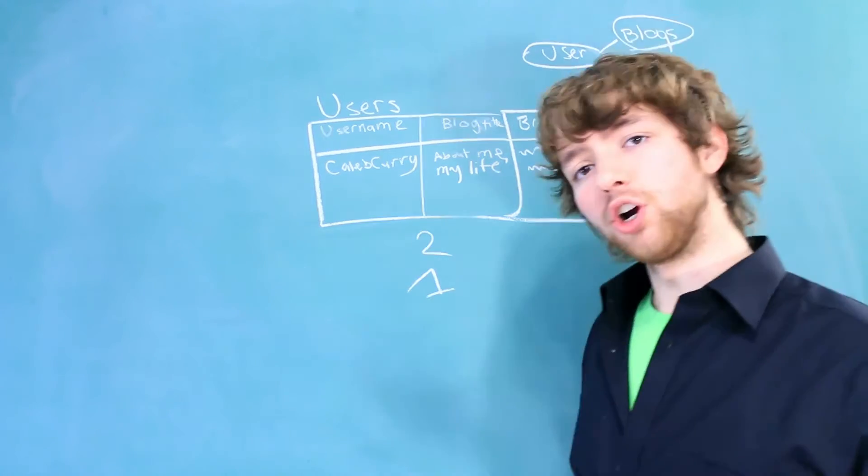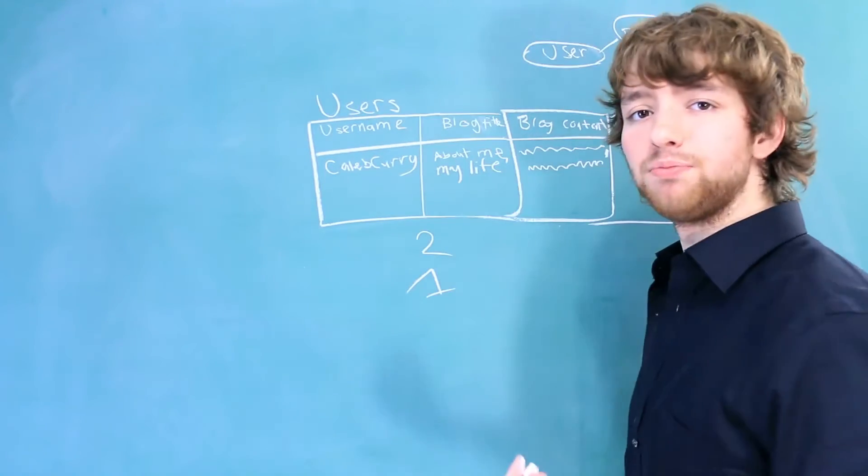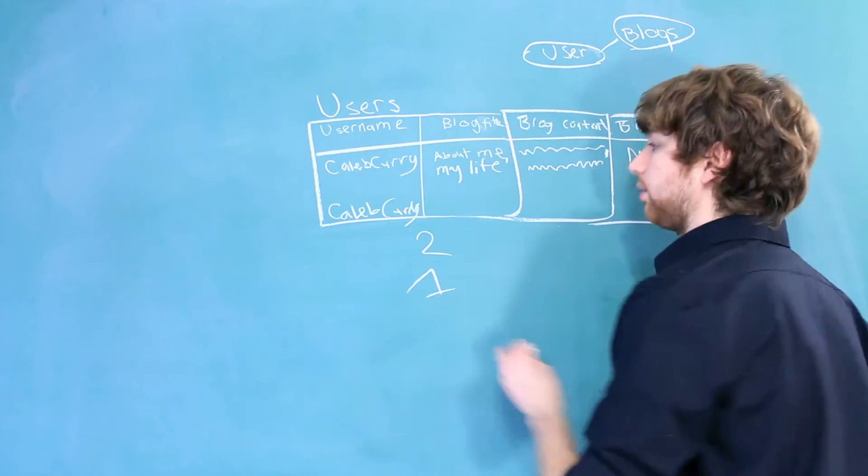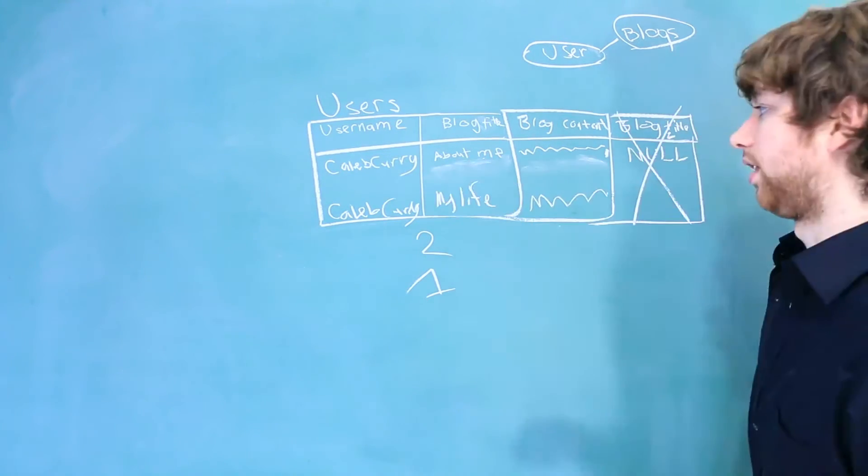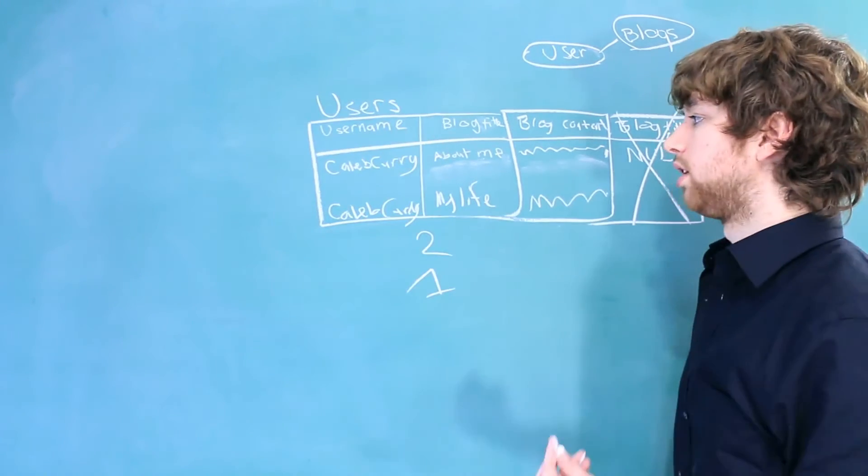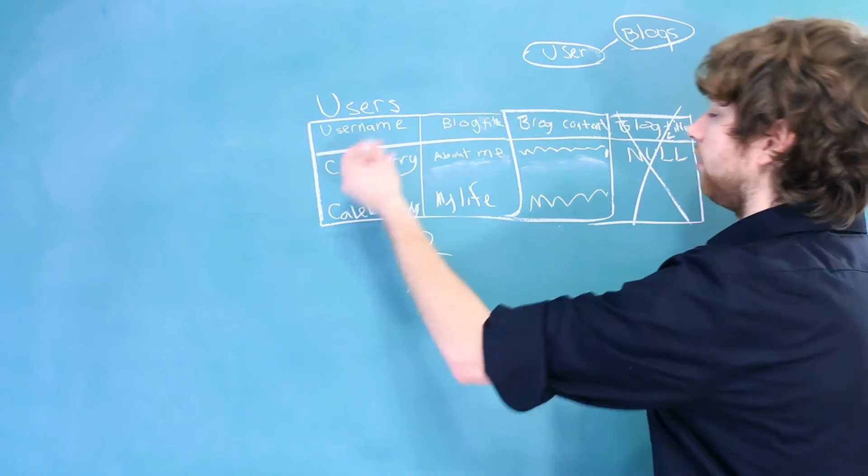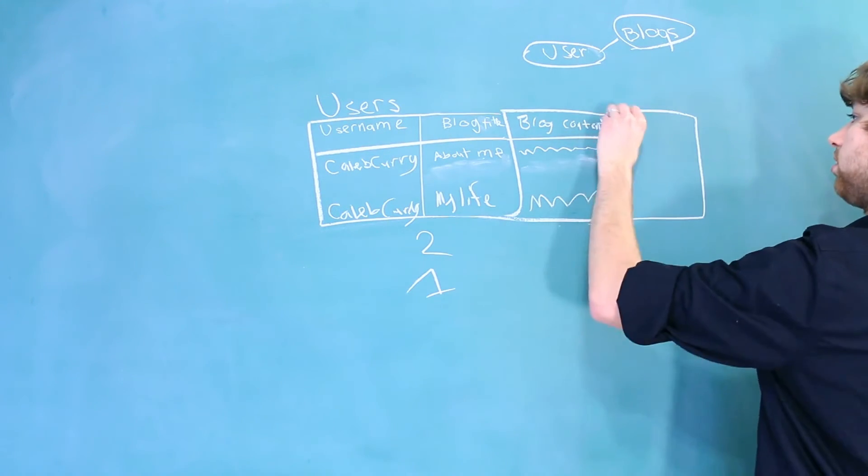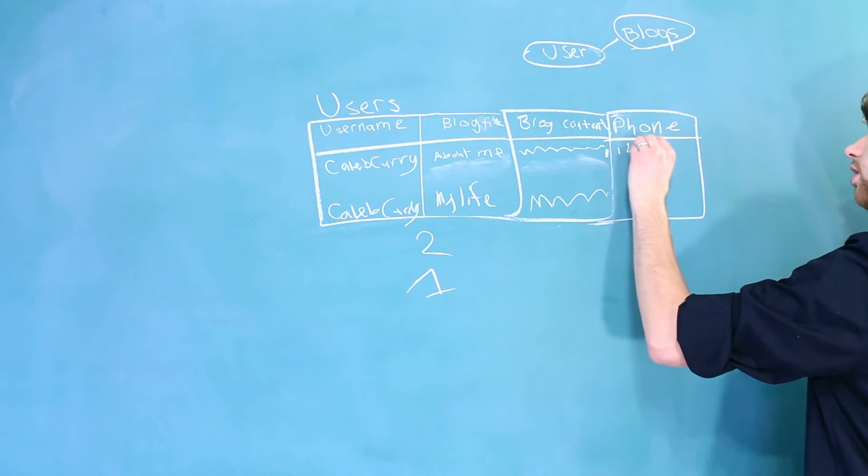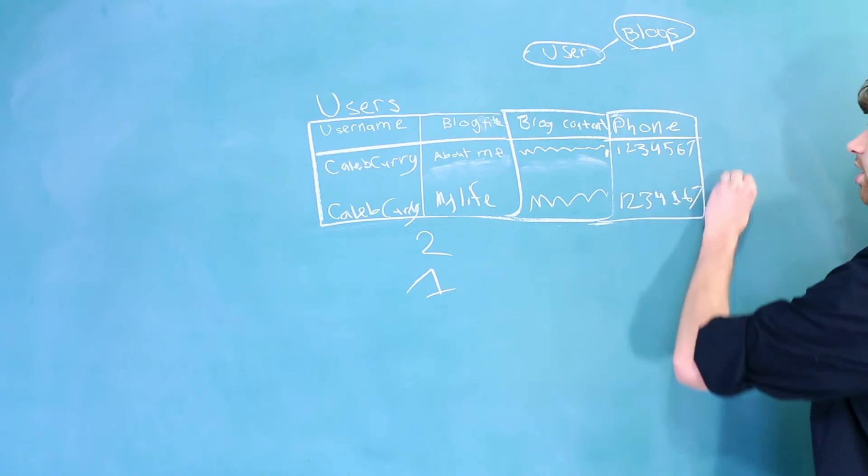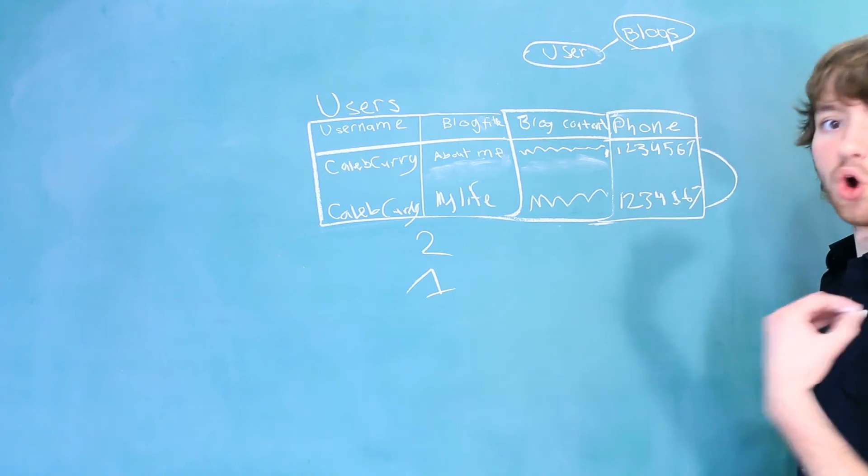Now let's go on to the third bad way to do this. And that would be to actually add a row. So we would say Caleb Curry, and we would put the second blog in here. And in this situation, it's really not that bad, because we only have one username column. But if we had some other attributes of the user in here, for example their phone, well, now we have their phone number in here twice. This is just really, really bad, because now we have redundant data.